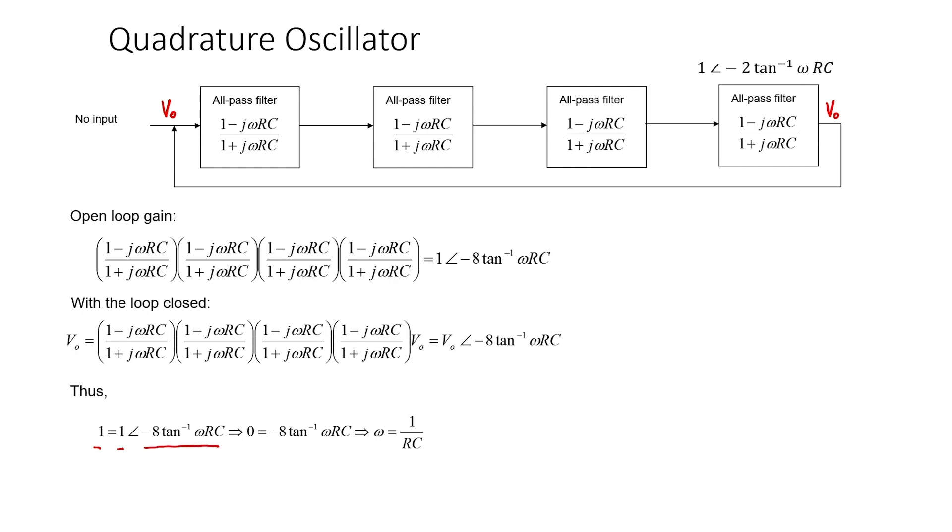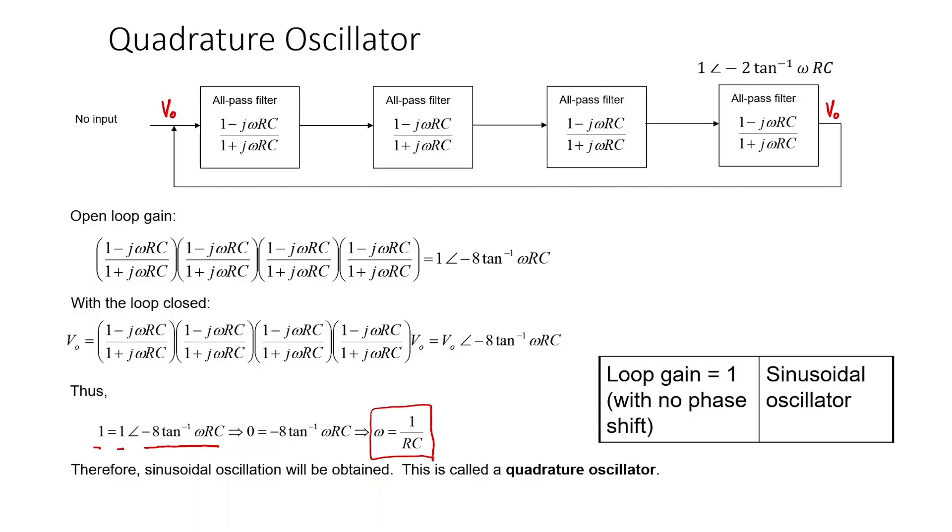Therefore, omega equals 1 over RC is our frequency of oscillation. The quadrature oscillator is a kind of interesting oscillator because it allows us to tap off 90-degree phase shifts from the signal. In this situation, the loop gain equals 1.